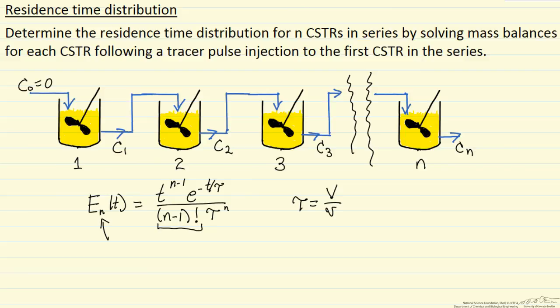So the question would be, what does this look like if we have a detector at the end of this last reactor and we were doing a tracer pulse injection?